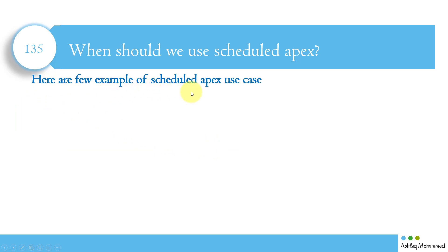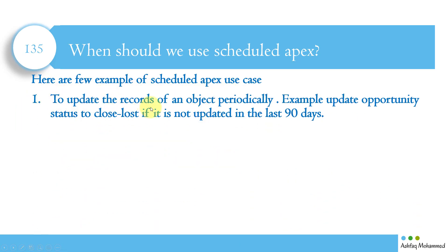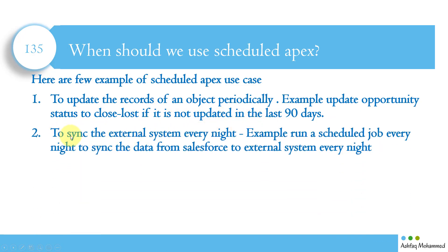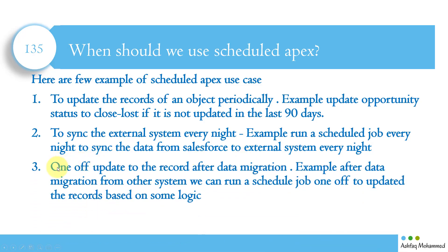Use scheduled apex to update the records of an object periodically — for example, update an opportunity status to Closed Lost if it has not been updated in the last 90 days. Another use case is to sync an external system every night — for example, run a scheduled job every night to sync data from Salesforce to an external system. Also, for a one-off update to records after data migration — for example, after migrating data from other systems, run a scheduled job to update records based on some logic.